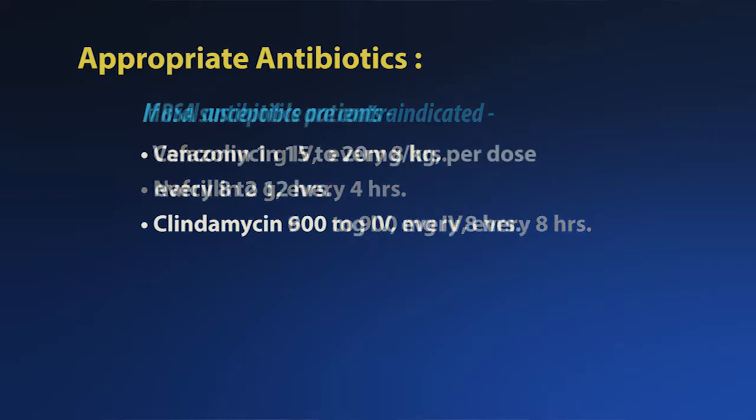For MRSA-susceptible patients, vancomycin 15 to 20 mg per kilogram per dose every eight to 12 hours, or clindamycin 900 mg intravenously every eight hours may be considered. If none of these are appropriate, then an infectious disease consult should be considered for the use of daptomycin, ceftaroline, or linezolid. Parenteral antibiotics are generally reserved for patients who are immunocompromised, have comorbidities, have signs of systemic toxicity, or are unable to take oral antibiotics.